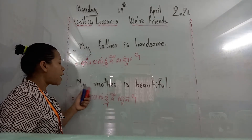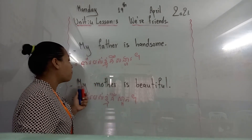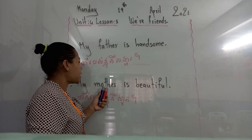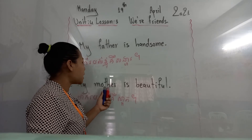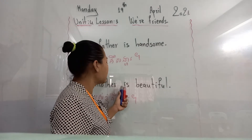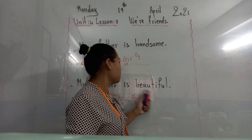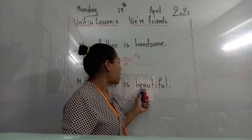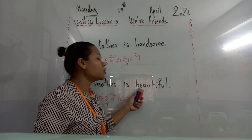One more sentence: My mother is beautiful — spell. M-Y, M-O-T-H-E-R, I-S, B-E-A-U-T-I-F-U-L. My mother is beautiful.